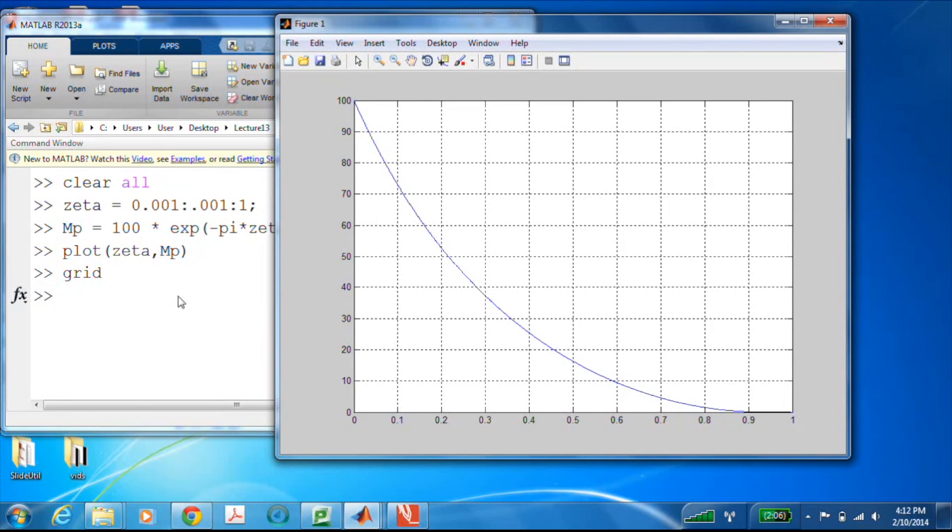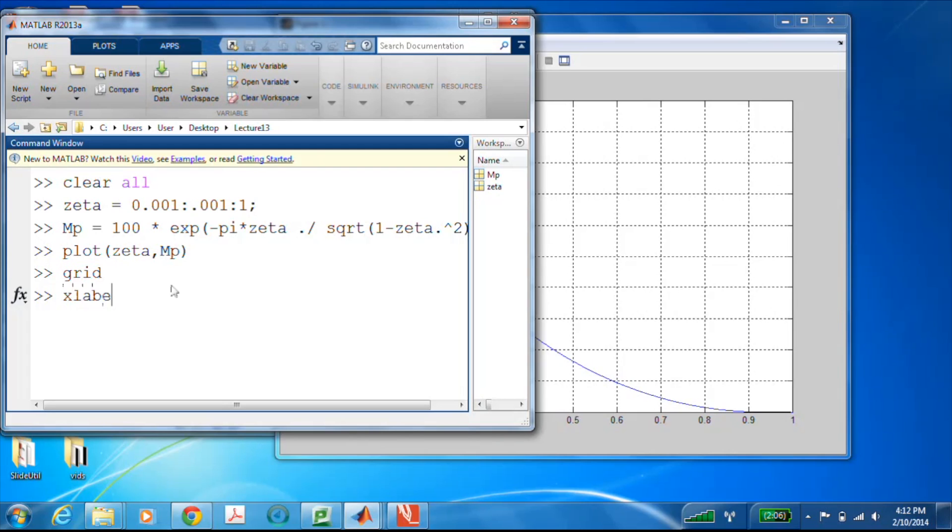And now we have this beautiful plot where if we had a particular zeta that we wanted, then we can pull off the percent mp that would happen, or the other way around, which is probably more useful. Let me throw some labels on that.